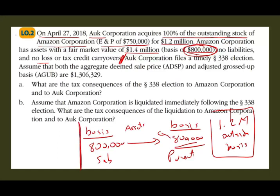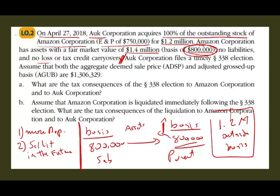There are two issues that would benefit us if we could increase the basis. One: we would have more depreciation. If we can have the basis higher than 800,000, when we depreciate this asset, we'll have more depreciation. Two: when we sell this asset in the future, if we have a higher basis, it means we have a lower gain. So there are two benefits if somehow we can have more basis in the asset. But the rule is you transfer the basis.